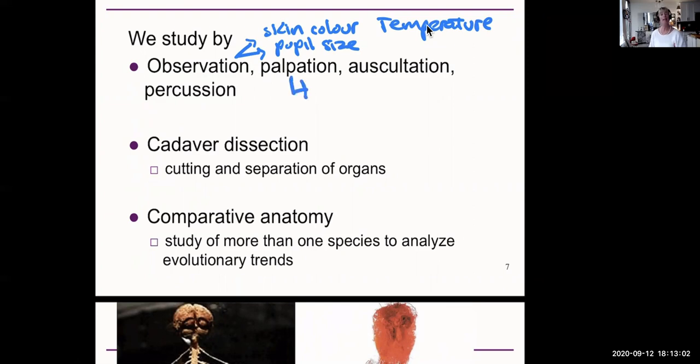Another method is called palpation. That is when you press on tissue. So in the case of taking your heart rate, for example, which you might take at your carotid artery or your radial artery. You have quadrants of your stomach, your abdominal area, that a medical practitioner might press on different parts to see which organ might be in trouble. Auscultation is the use of a sphygmomanometer or a stethoscope. So that's also taking heart rate by taking it with a stethoscope.